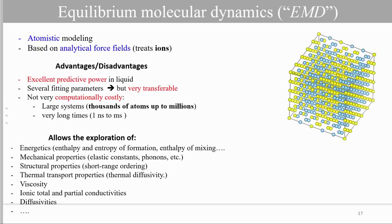So the second type of atomistic scale simulation that we use in the center is equilibrium molecular dynamics, or EMD. Equilibrium molecular dynamics is also atomistic modeling, but it's based on the analytical force field. So we don't treat electrons like DFT, we treat ions. It has excellent predictive power in liquids. However, we need several specific parameters, but these parameters are very transferable from a small order system to a high order system. Compared to DFT, it is not very computationally costly. One can envisage a large system, thousands to up to a million atoms, and also a very long time of simulation, which is very important when we want to calculate transport properties.